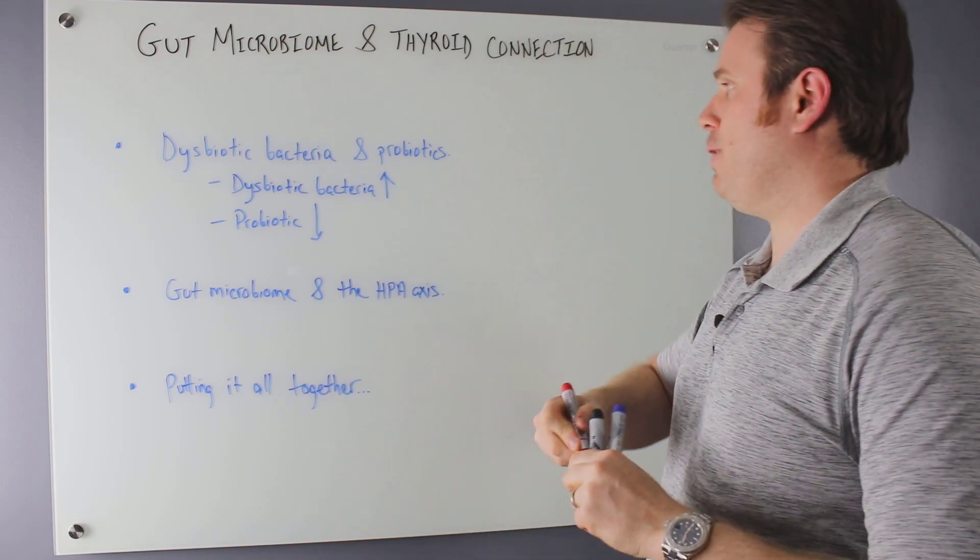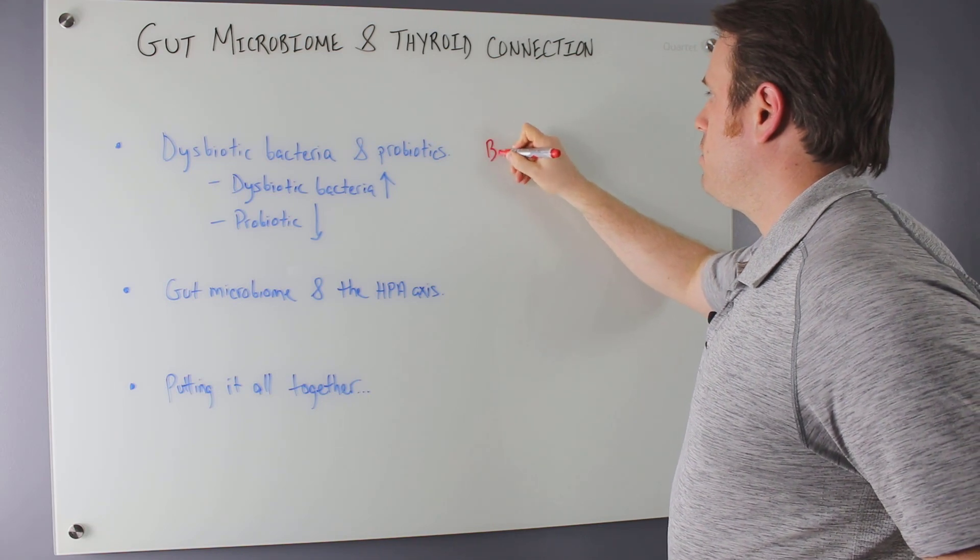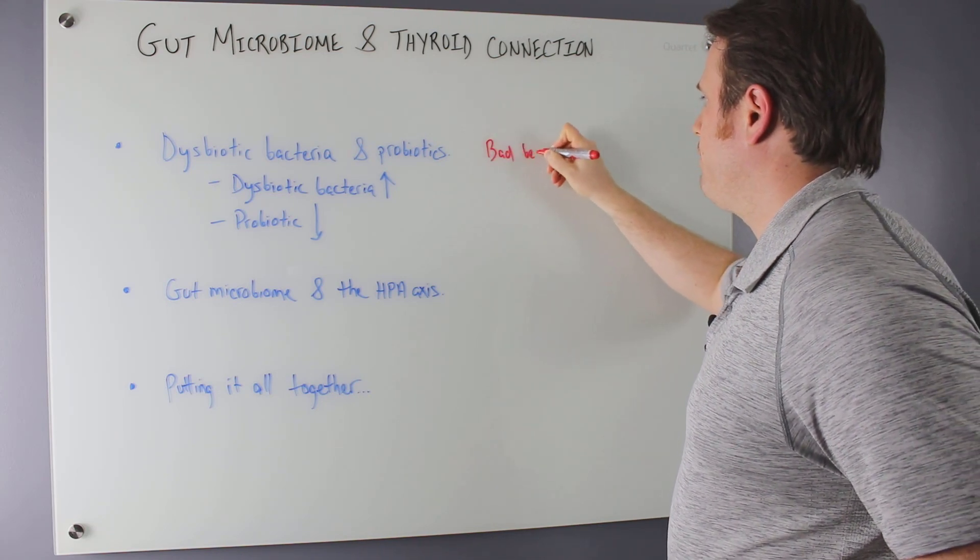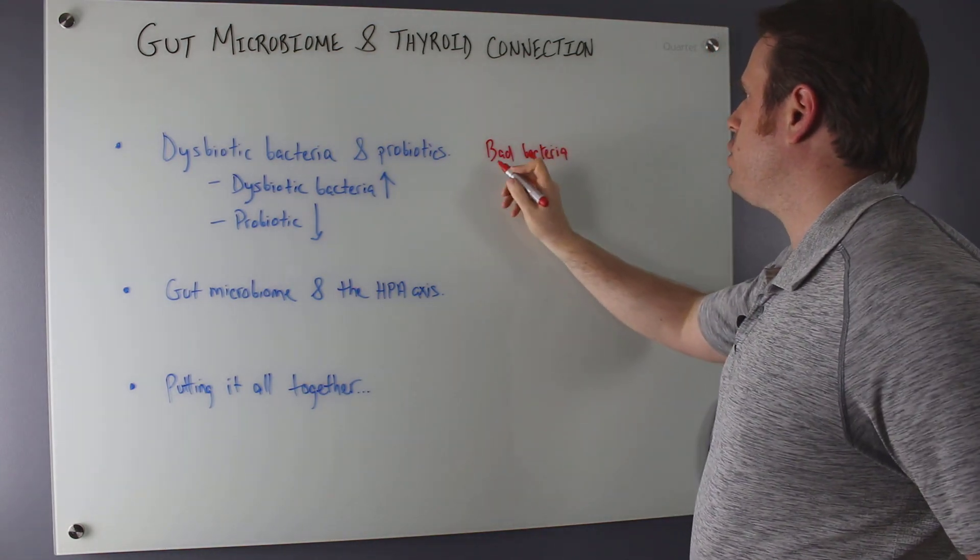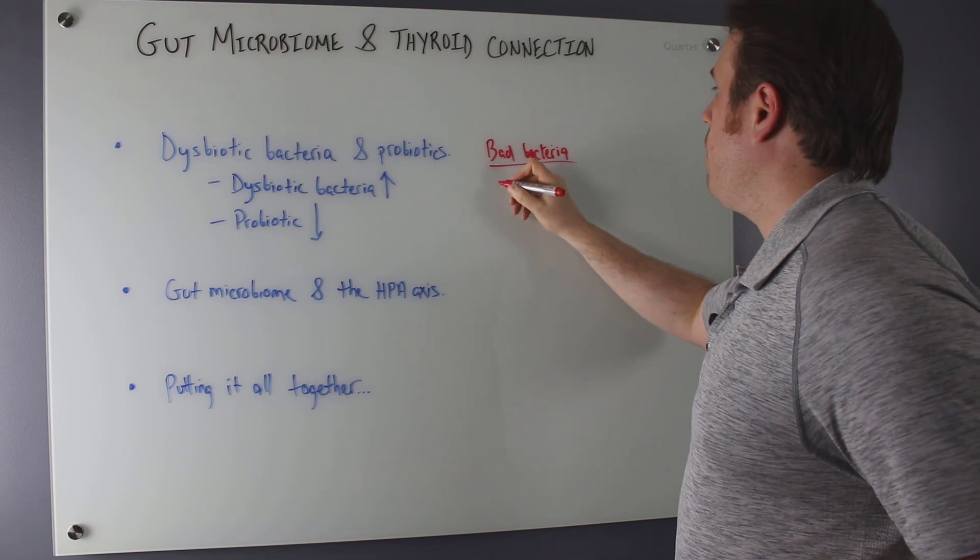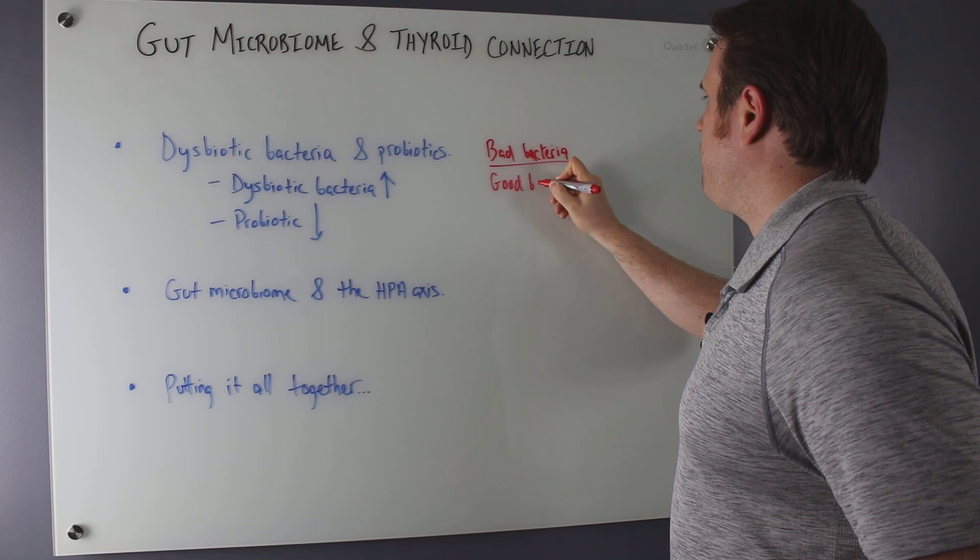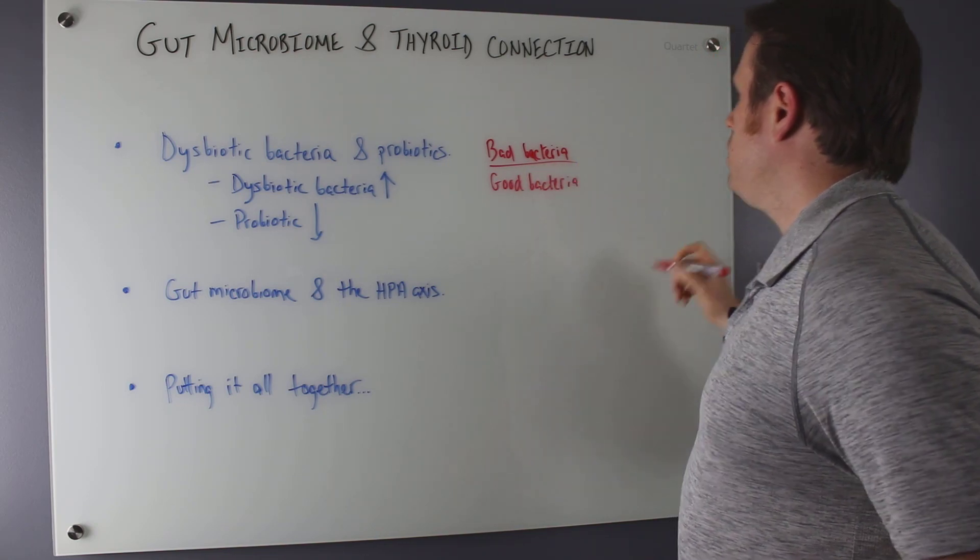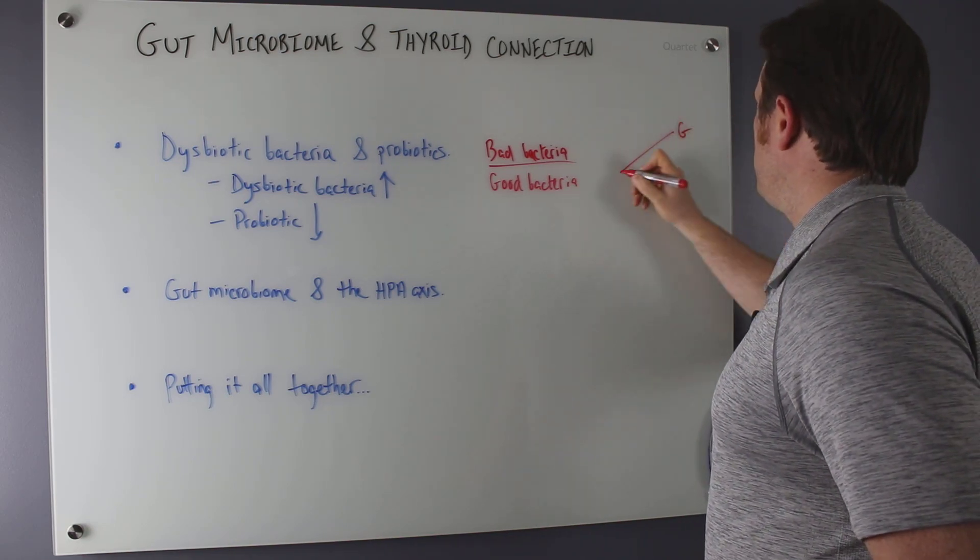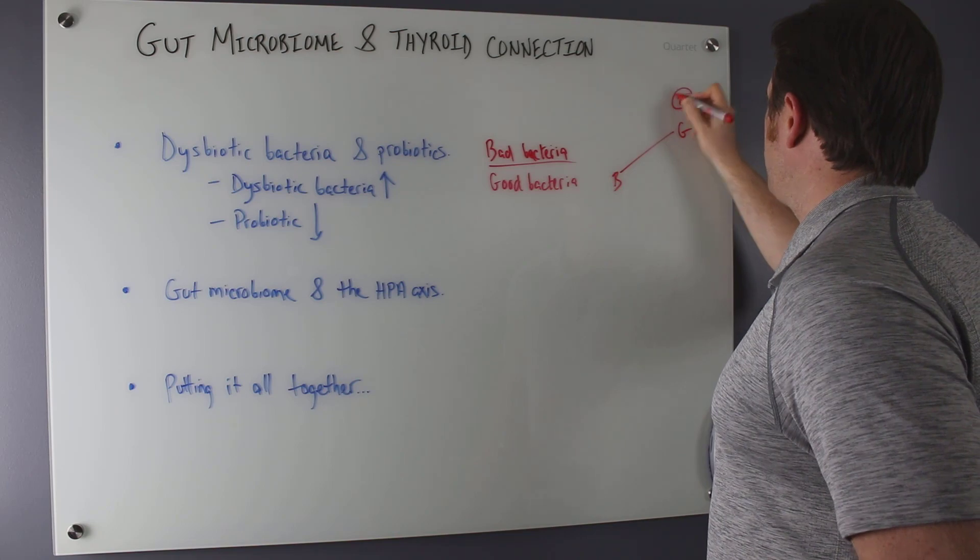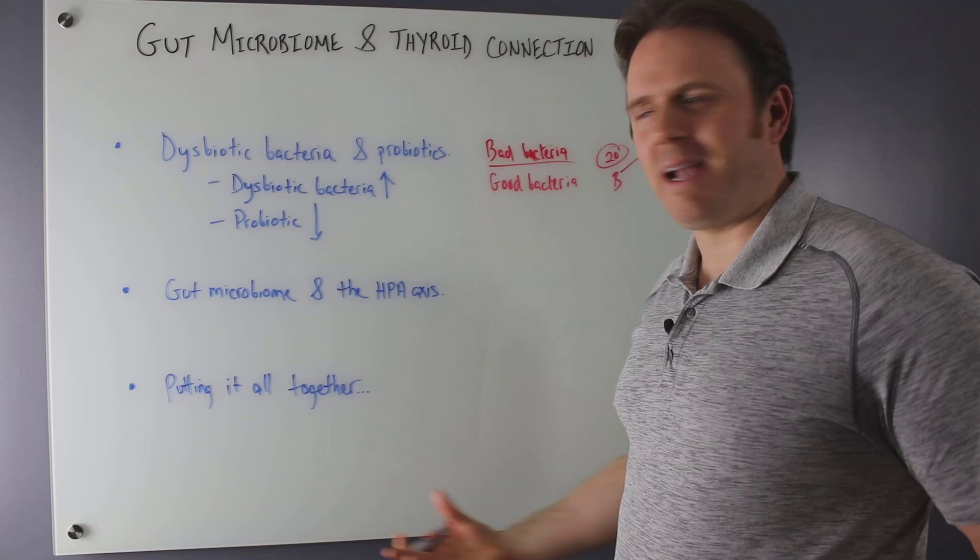We have dysbiotic bacteria and probiotics. Dysbiotic bacteria is bad bacteria, our not so good bacteria. I have a couple of studies here I'll put in the resources below. We have our bad bacteria, the dysbiotic bacteria, and we have our probiotics, which is our good bacteria. Normally we have a healthy ratio. Typically you're looking at like an 80-20, 80% good bacteria, 20% bad. So 80-20 is kind of the ratio we like, at least greater than half being beneficial bacteria.